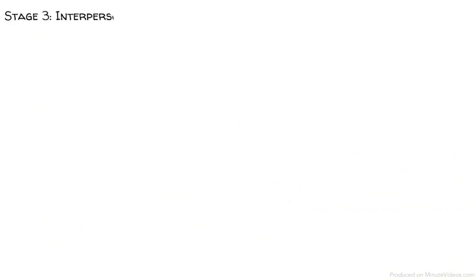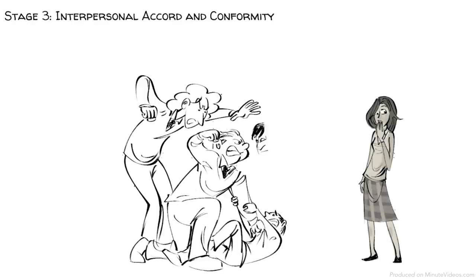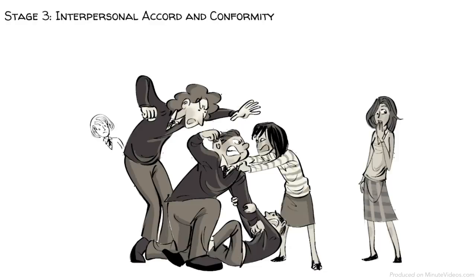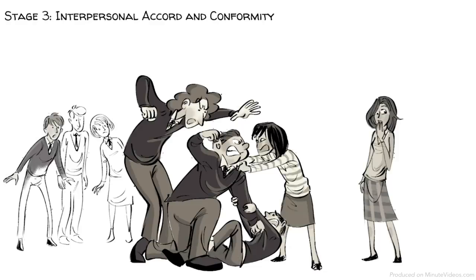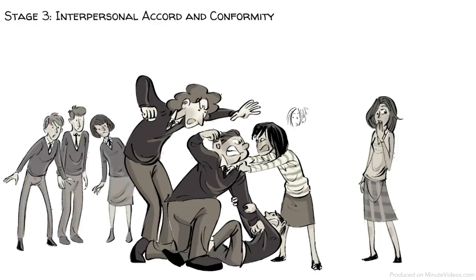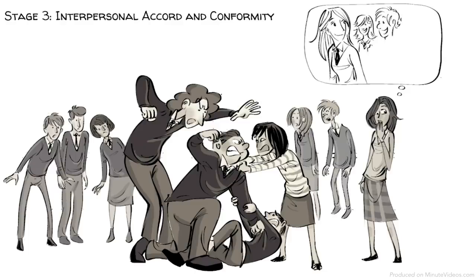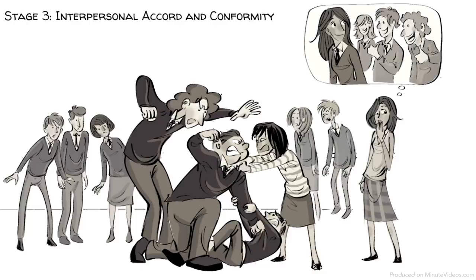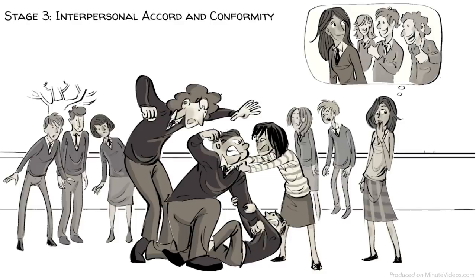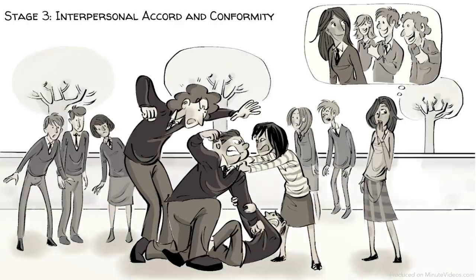At stage three, interpersonal accord and conformity guide our moral judgment. Betty sees the fight and wants to intervene, but when she realizes that all the others are just watching, she decides not to get involved. She wants others to see that she is a good girl who is conforming with the ethics of the community. She asks herself: what do others think of me?